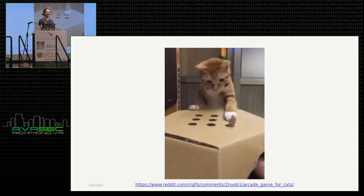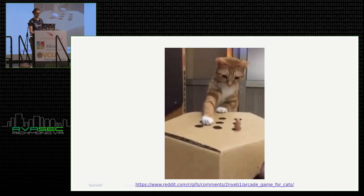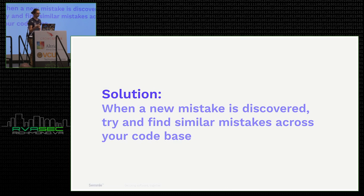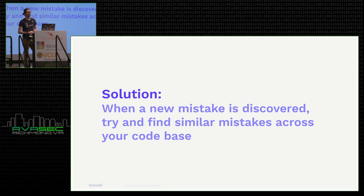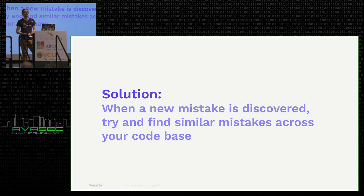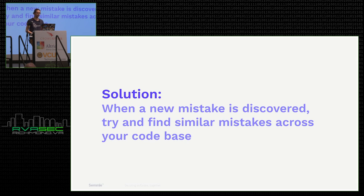What if we use the information of new vulnerabilities as an opportunity? When a new mistake is discovered, we ask ourselves: is this mistake happening anywhere else? Once you've found the root cause, it could be something architectural that makes a certain class of vulnerability more likely — your use of C may increase chances of memory corruption issues, or using Apache OGNL or Spring Expression Language may make you more vulnerable to RCE over HTTP. Companies such as Google and Microsoft call this process variant analysis.